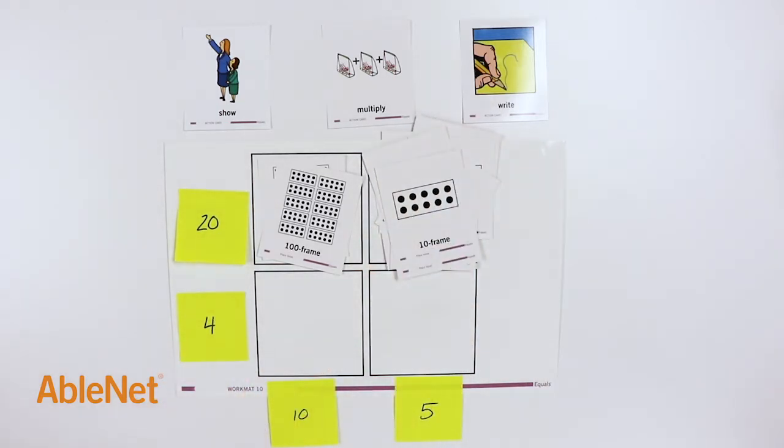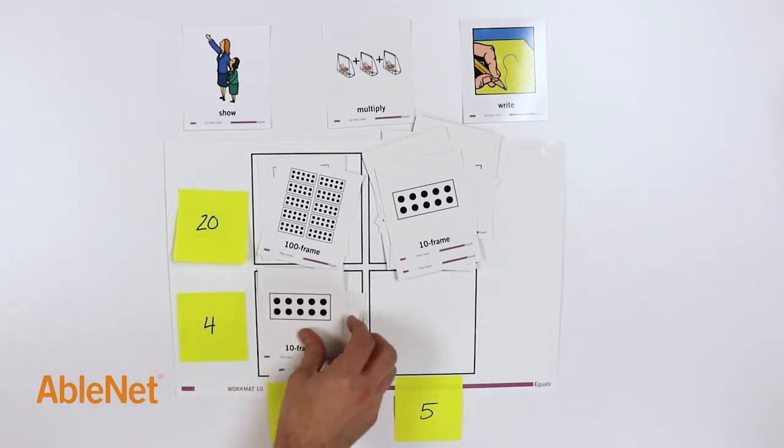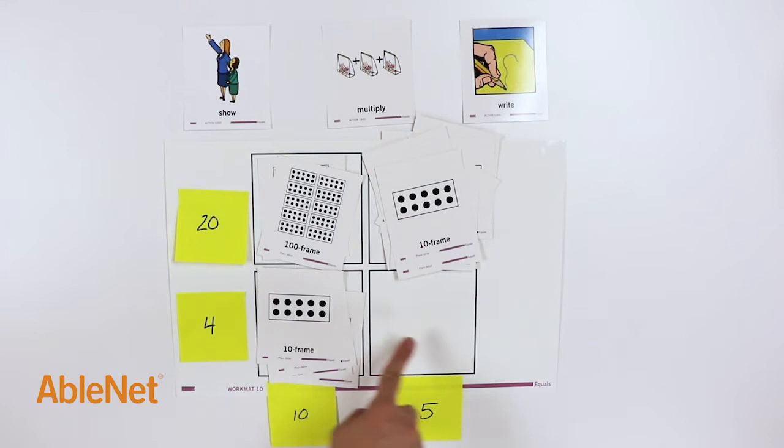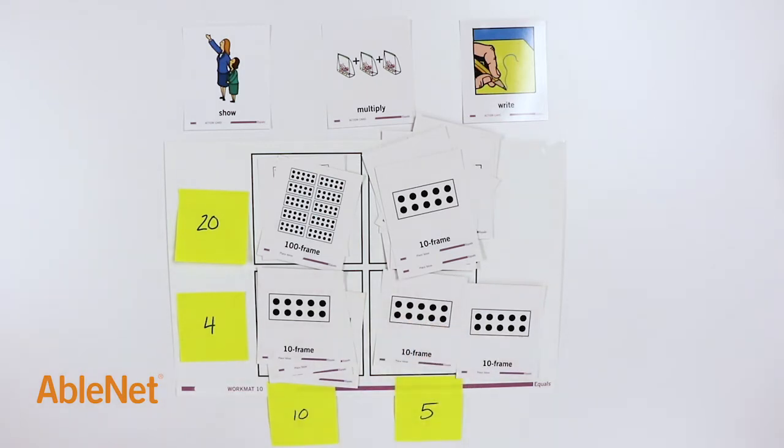Next is 4 times 10, 4 tens. Last is 4 sets of 5. We can show that with two 10 frames. There are two sets of 5 in each 10 frame. 1, 2, 3, 4. We now have 4 sets of 5. Now we can find our total.